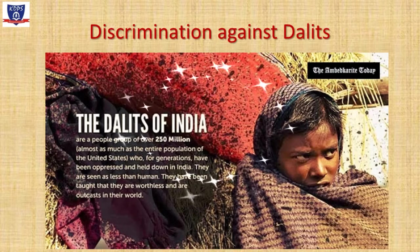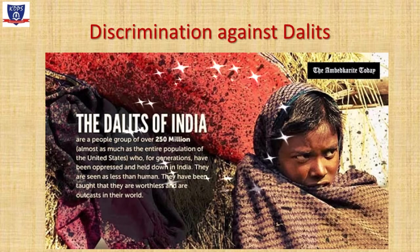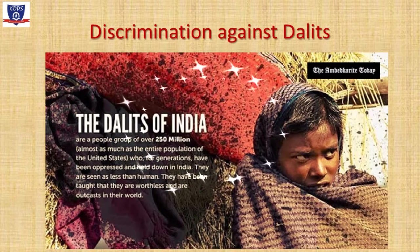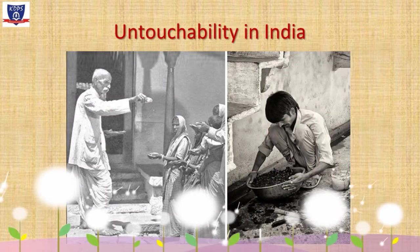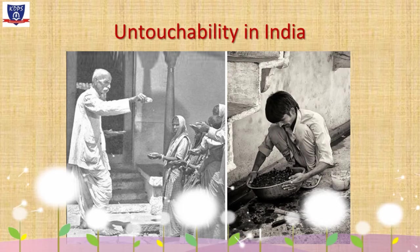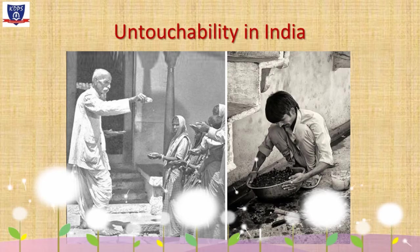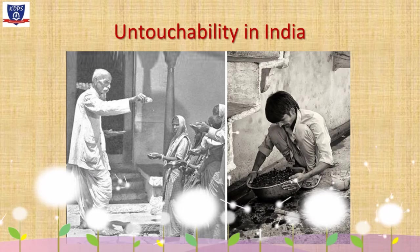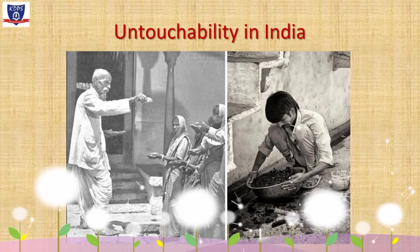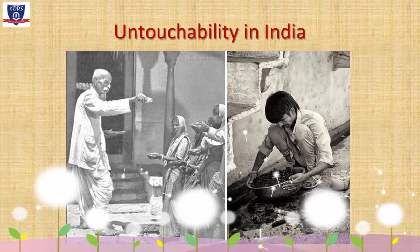We must not deprive anyone around us of their basic rights. Everyone must be treated equally and no one must enjoy more privileges than others on the basis of religion, caste, race, or place of birth. The caste system in India gave rise to untouchability in the past. Untouchability was abolished by our constitution, but it had already created a wall between the so-called high caste and low caste. It not only divided our society but also deprived a large section of people of their basic rights.